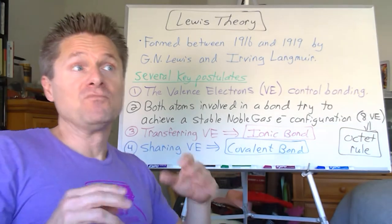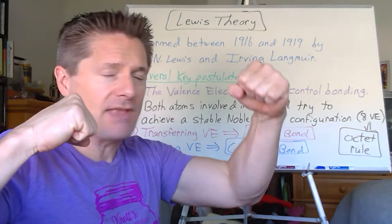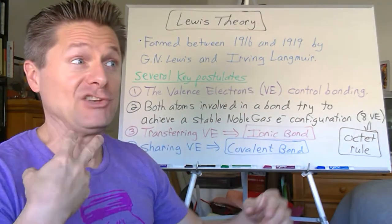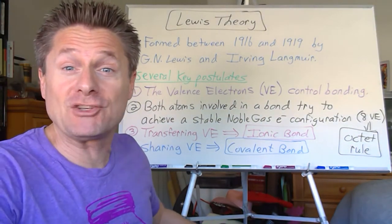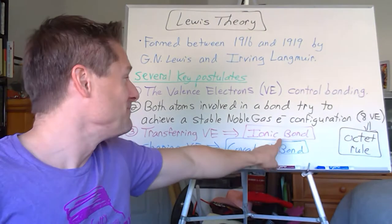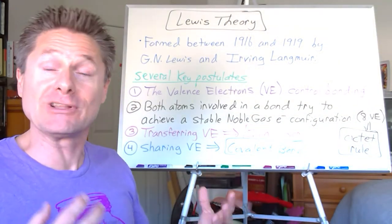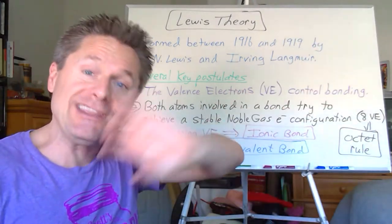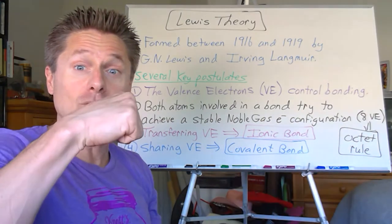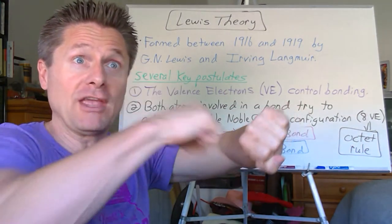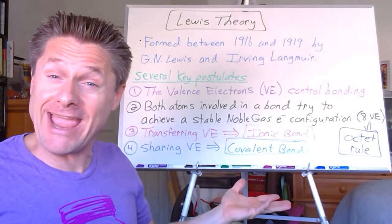There are two ways atoms can achieve a full valence shell. Either one atom can take, or steal, electrons from another — that's an ionic bond. If there's a transfer of electrons, it usually happens between a metal and a non-metal: the non-metal steals electrons from the metal because the metal wants to get rid of a few and the non-metal wants to take a few. Now one is a cation and the other is an anion — electrostatic attraction — it's a match made in heaven.